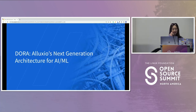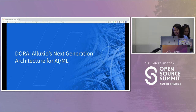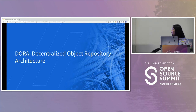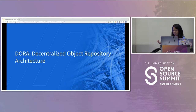I'm going to pass the torch to Lou, who is the engineer working on the Dora project. Dora is Alluxio's next generation architecture for AI and machine learning. Dora stands for Decentralized Off-heap Repository Architecture. AI machine learning is pushing its limits, and our users are pushing our limits — to fulfill their requirements, we came up with this next generation architecture.